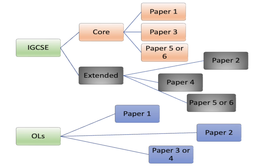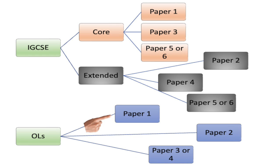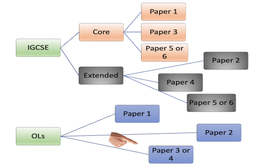When it comes to O Level, we still have three papers with almost the same names: paper one, paper two, and paper three or four. Paper one and paper two are the written papers, and paper three or paper four is related to practical.